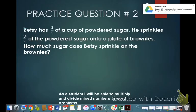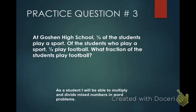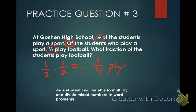Let's go on to example number three. This question is on your test — it's a very similar test question. At Goshen High School, half of the students play a sport. Of the students who play a sport, half play football. What fraction of the students play football? There are a lot of ofs — we're going to multiply. One-half times one-half: cannot pre-simplify anything, so multiply across. That gives us one-fourth. One-fourth of the students play football. That's a tough one — make sure you have it.